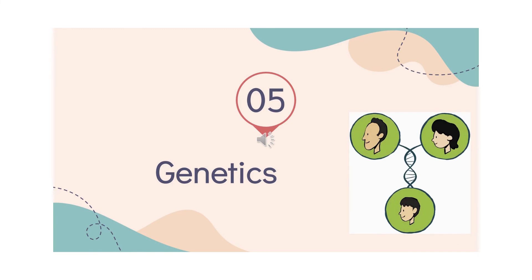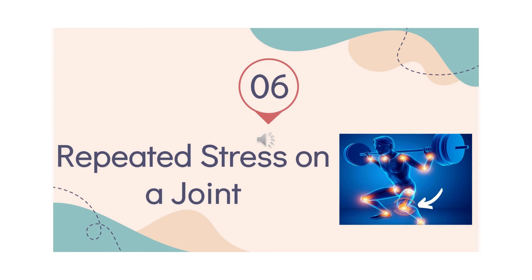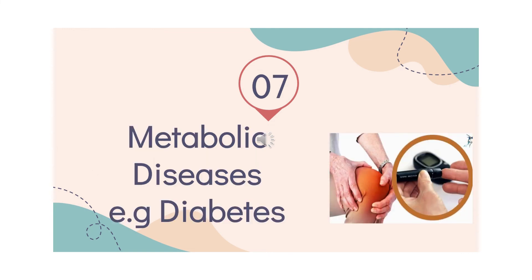In addition, a family history of osteoarthritis can increase the chance of getting it. Repeated stress on your joints — for example, if you are a soccer player, go for long-distance running, or do weightlifting — these are sports that may increase your risk of developing knee osteoarthritis. Some metabolic diseases can also increase the risk of developing osteoarthritis, for example diabetes.